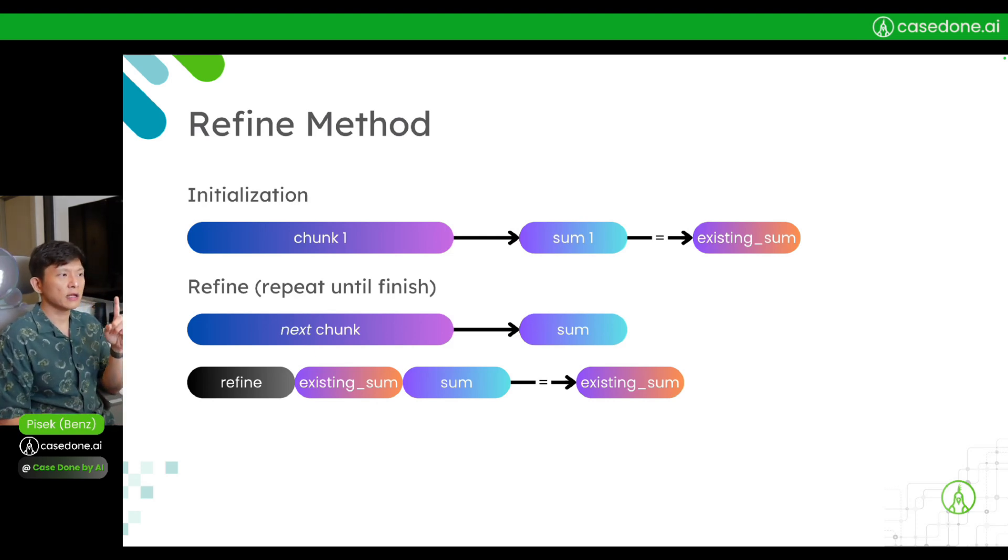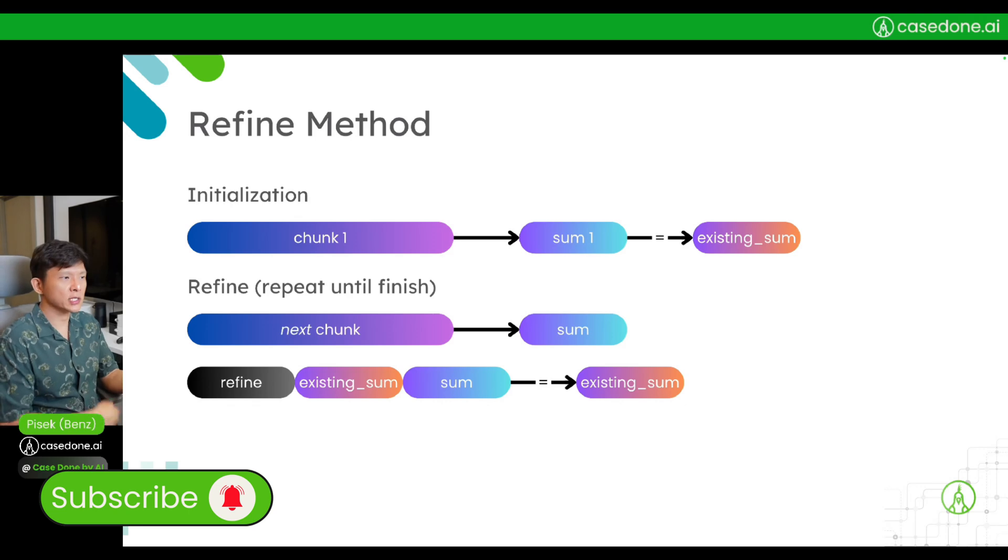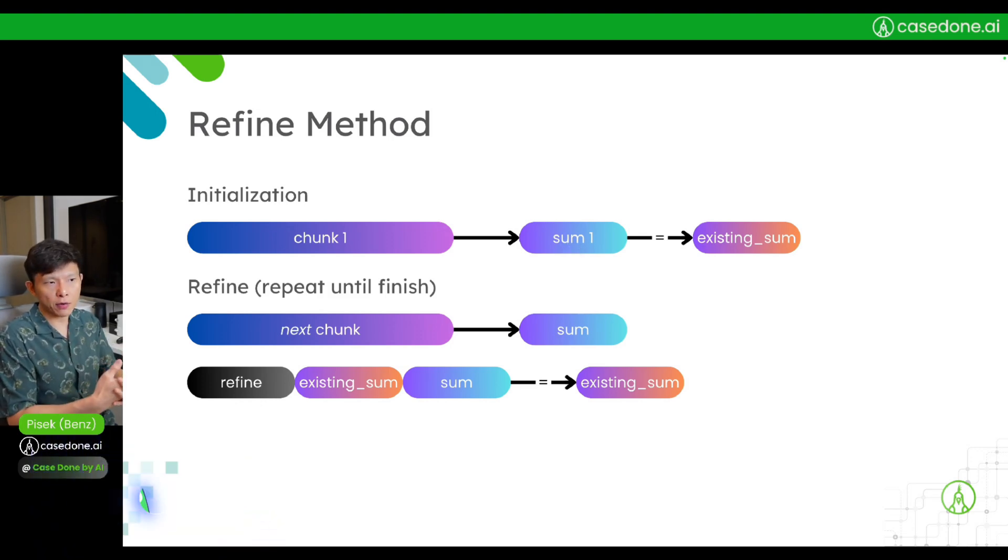Phase number one is the initialization phase. We take chunk number one, get a summary, and then set up a variable called existing_sum and give the summary to that variable. Then in the second phase...